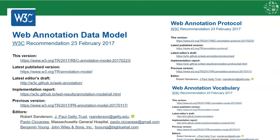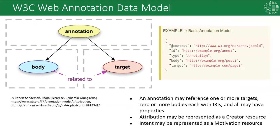Filtered Push specifically investigated extending the model beyond web pages and documents in order to annotate data. The W3C web annotation data model was ratified in 2017. Essentially the model has three entities: the annotation itself and its relationship to a body and a target. An annotation may reference one or more targets, zero or more bodies, each with IRIs, and all may have properties. Attribution may be represented as a creator resource, and intent may be represented as a motivation resource.